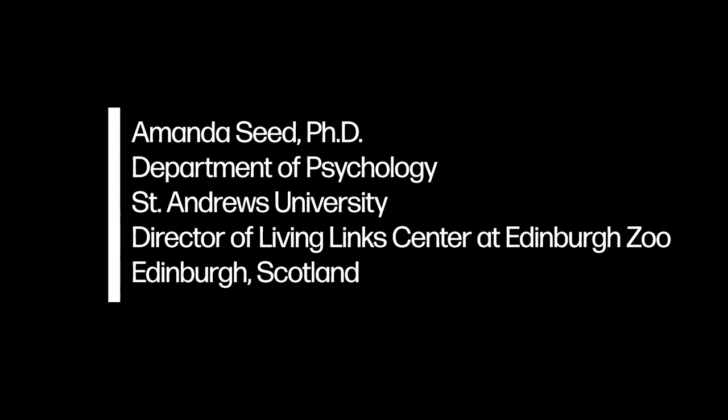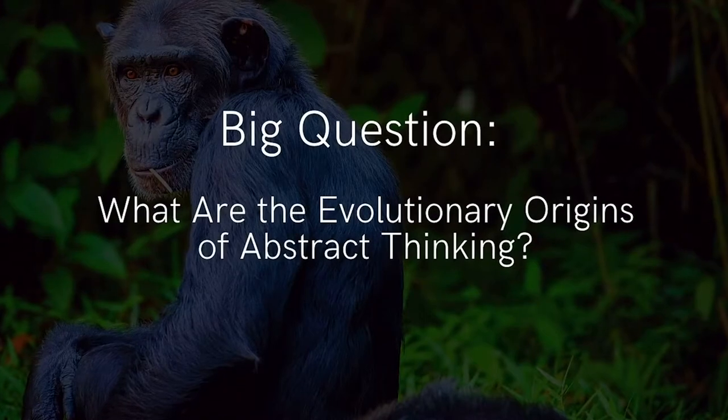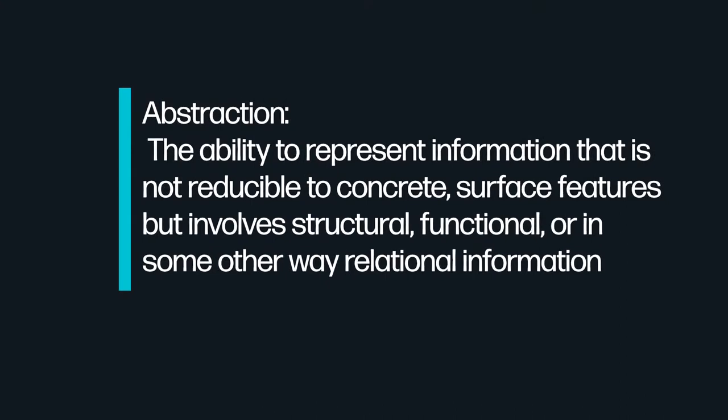I'm particularly interested in physical cognition, memory, and problem solving. My big question today is: what are the evolutionary origins of abstract thinking? We might as well start by trying to define what we mean by abstraction. Abstraction is the ability to represent information that's not reducible to concrete surface features but involves structural, functional, or in some other way relational information, and it's a big question because it's at the heart of most intelligent human thinking.